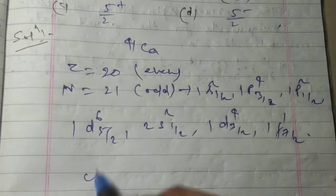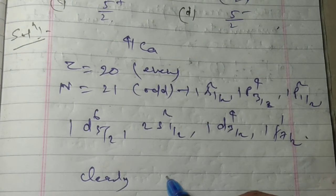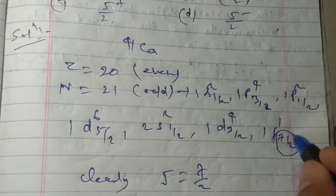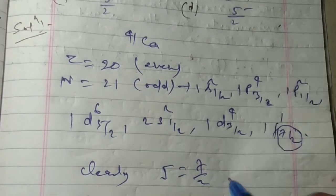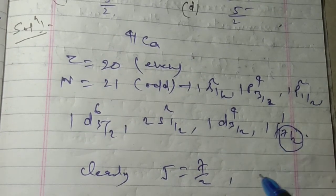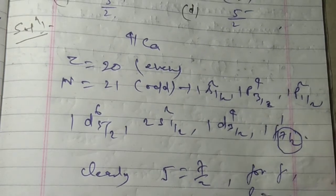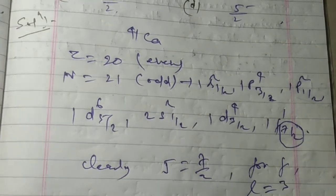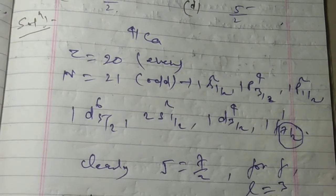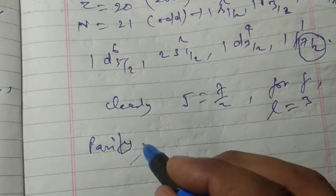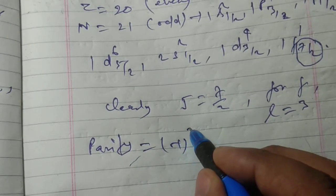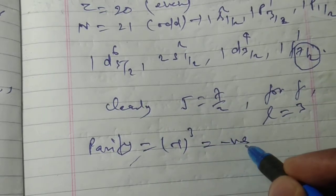So clearly, j is equal to 7/2. And for 1f1 7/2, for f, l is equal to 3. So this will give the parity equal to (-1)^3, and this is negative.